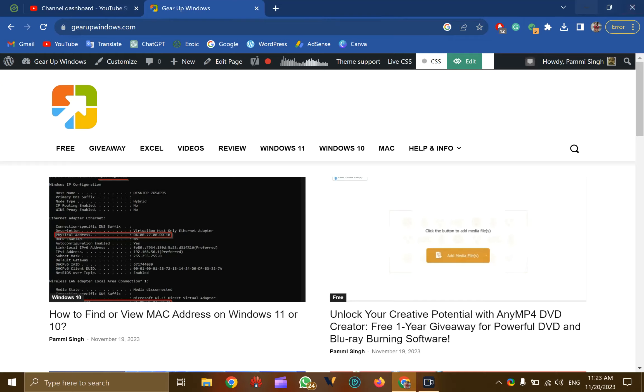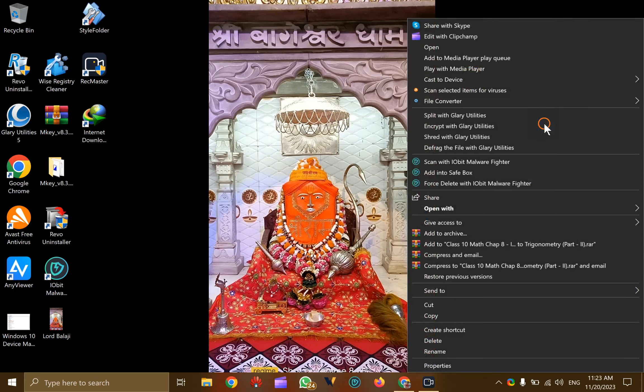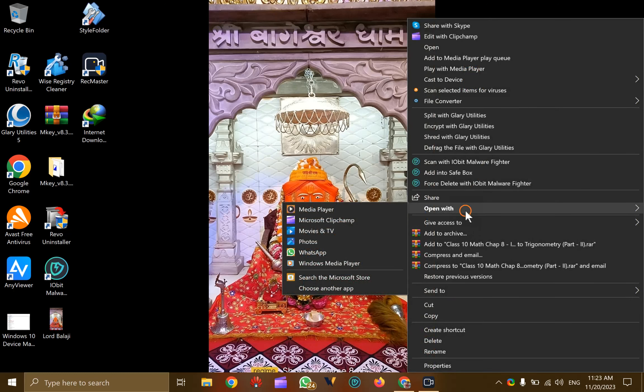Suppose you have a video that's 1 hour long and you want to save only specific parts of it. To do this, select the video, right-click on it, then select 'Open with' and choose Photos.